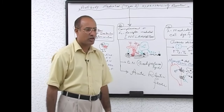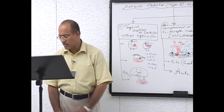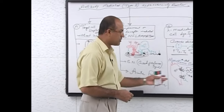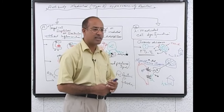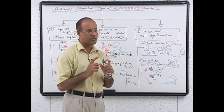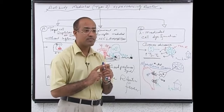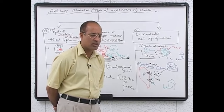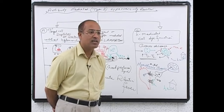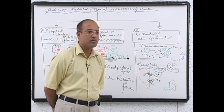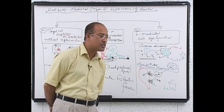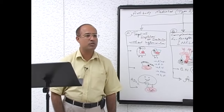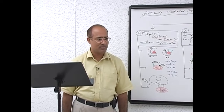Another similar example is insulin-resistant diabetes mellitus. In this case, autoantibodies bind with the insulin receptors. When autoantibodies bind the insulin receptors, insulin cannot work on the receptors, producing insulin-resistant diabetes mellitus. You give insulin to the patient but there will not be a good response.